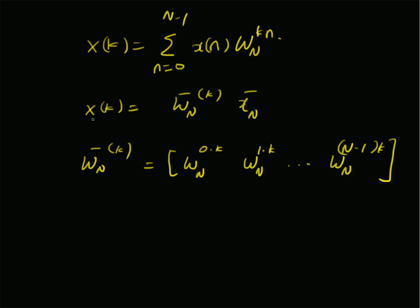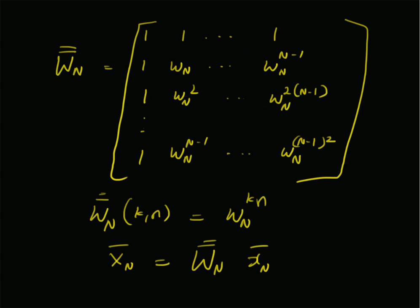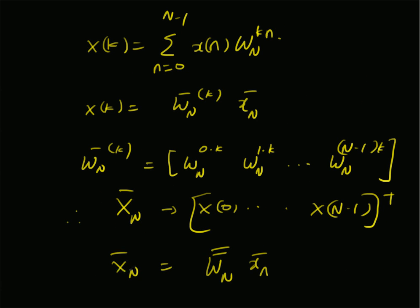The k-th element of the output vector capital X_N bar is given by X of k, which is simply the dot product of that row with the input vector. To derive all elements of capital X_N bar — that is X of 0, X of 1, and so on up to X of N minus 1 — we repeat this operation for each k. Therefore, the elements of capital X_N bar are indeed the product of matrix W_N double bar multiplied by the input vector x_N bar, since multiplying each row by the input vector gives the corresponding output value. Therefore, the DFT can be represented by this simple matrix and vector product, that is, a linear transformation. Thanks for watching.